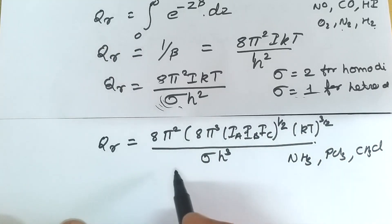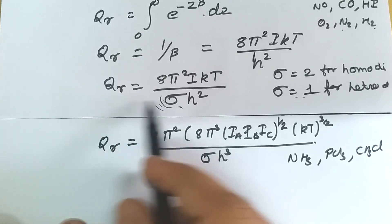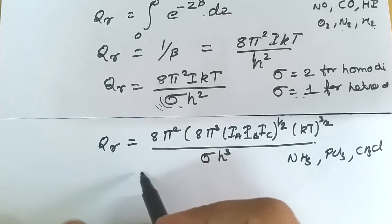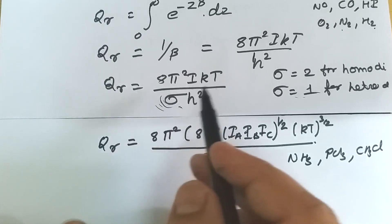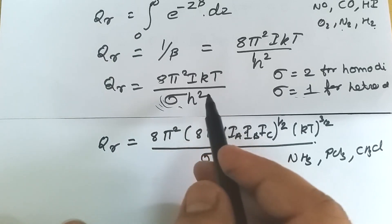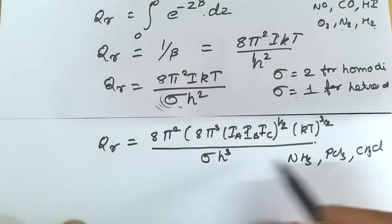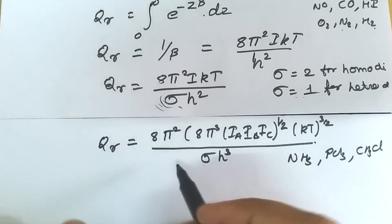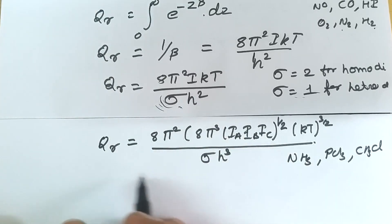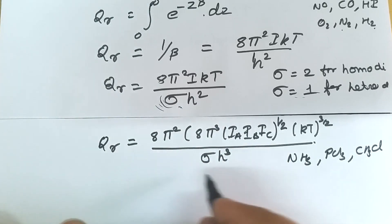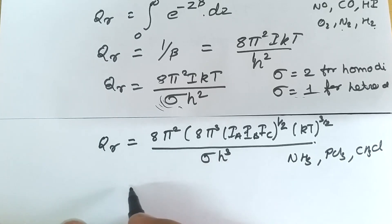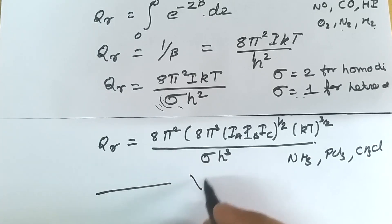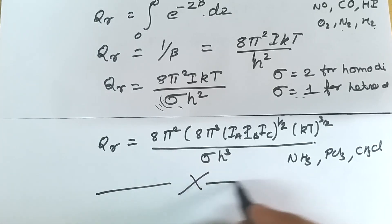With the diatomic formula we can easily find the rotational partition function for a diatomic molecule, and with the polyatomic formula we can find the rotational partition function for any triatomic or polyatomic molecule. Thank you very much.